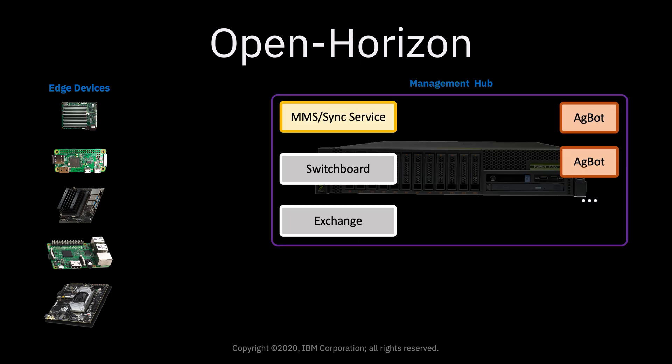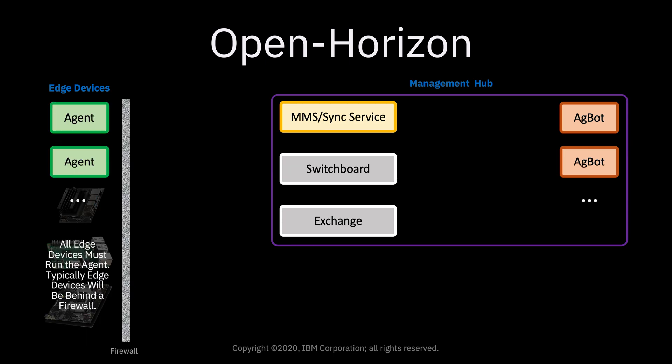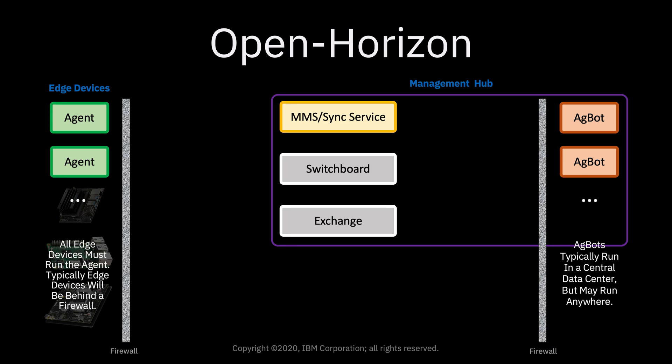From a software perspective, the management hub consists of these components: the model management service, also called the sync service; the switchboard; the exchange; and the agbots or agreement robots. On the edge side, there's an agent that runs on each of the edge nodes, and one agent in a Kubernetes cluster can manage the entire cluster. The agents and agbots can live behind firewalls, but they have to be able to reach out to the management hub, so the sync service, switchboard, and exchange must expose ports.